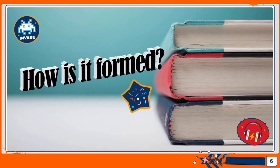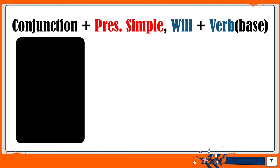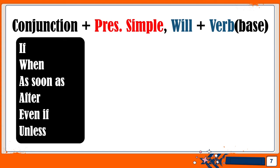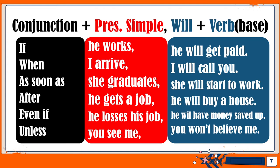How is it formed? In the first clause we need a conjunction plus the present simple. In the second clause we need 'will' plus the base of the verb. Conjunctions include: if, when, as soon as, after, even if, unless. Examples: 'If he works, he will get paid.' 'When I arrive, I will call you.' 'As soon as she graduates, she will start to work.' 'After he gets a job, he will buy a house.' 'Even if he loses his job, he will have money saved up.' 'Unless you see me, you won't believe me.' Notice that after the first clause we need a comma.